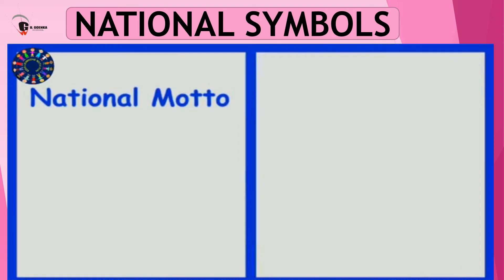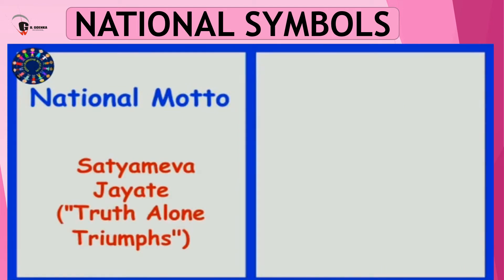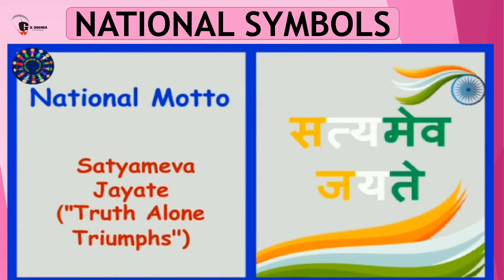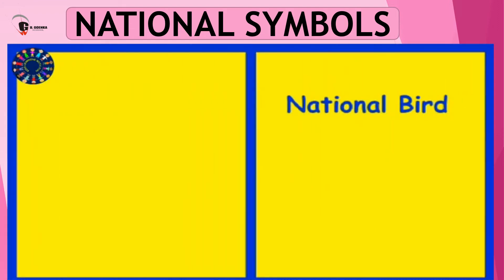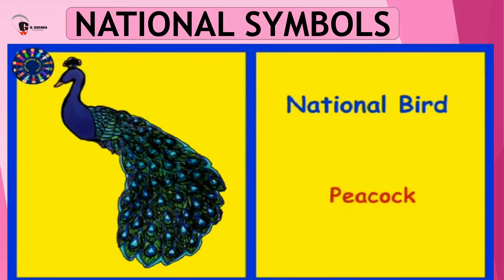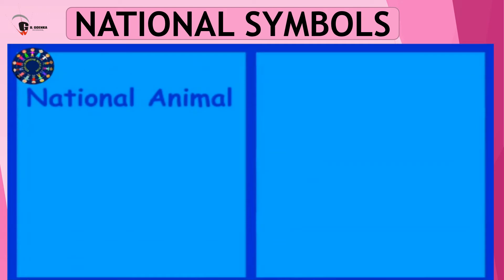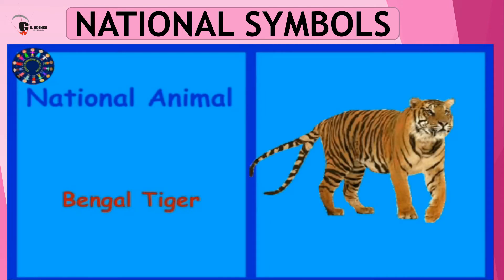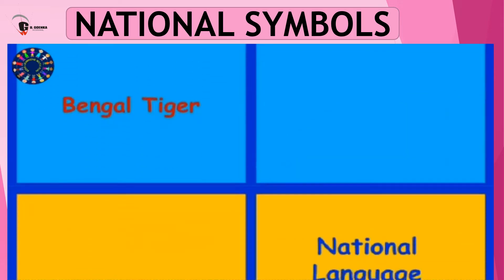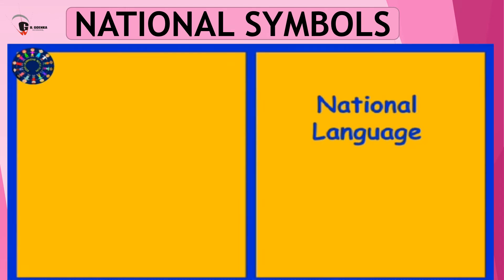What is our national motto? Our national motto is Satyameva Jayate. Which is our national bird? Our national bird is the Peacock. Which is our national animal? Our national animal is the Bengal Tiger. Which is our national language? Our national language is Hindi.